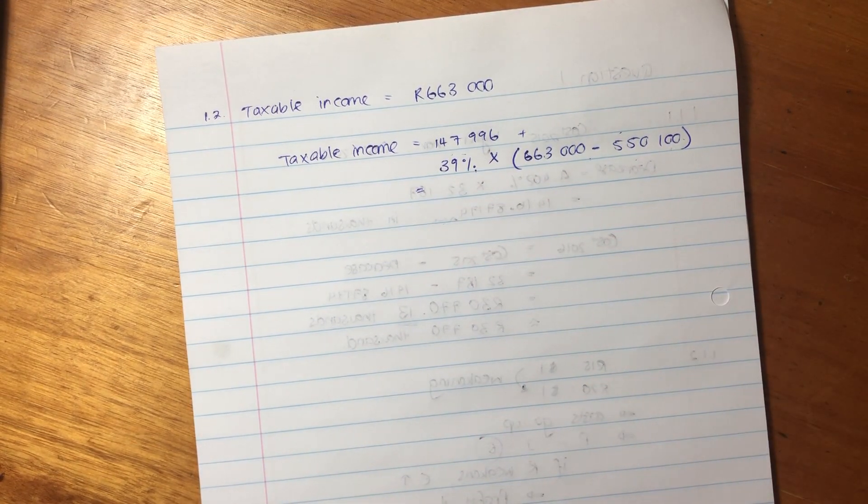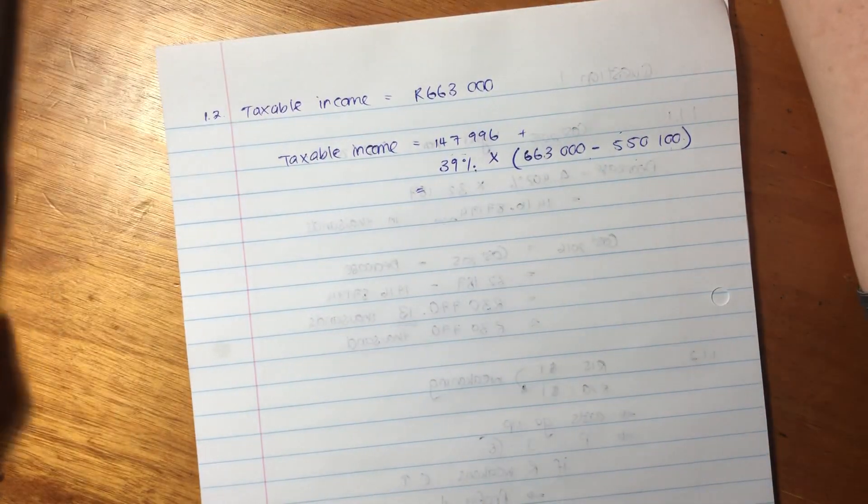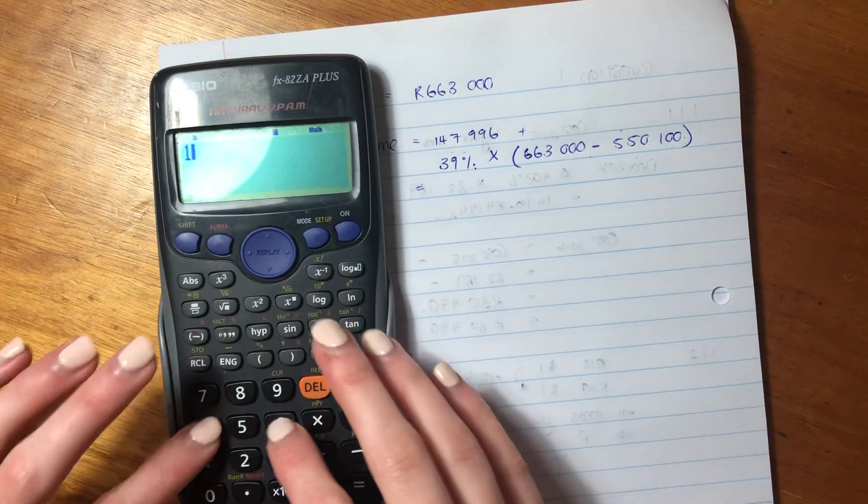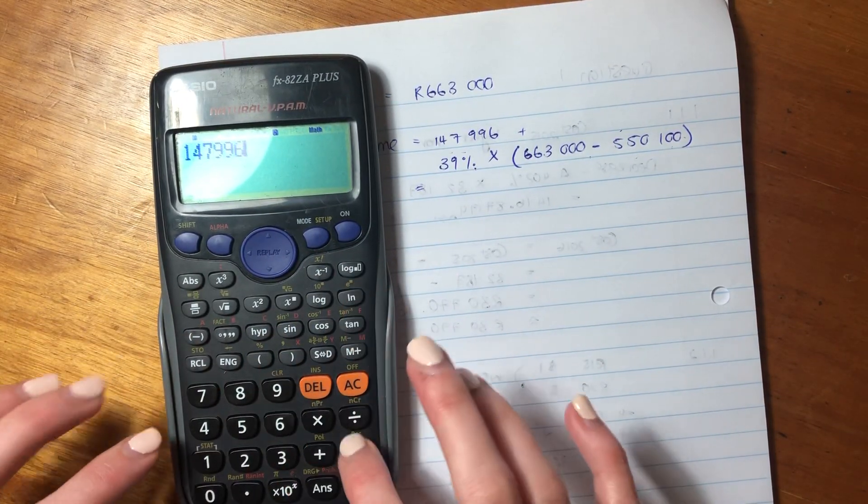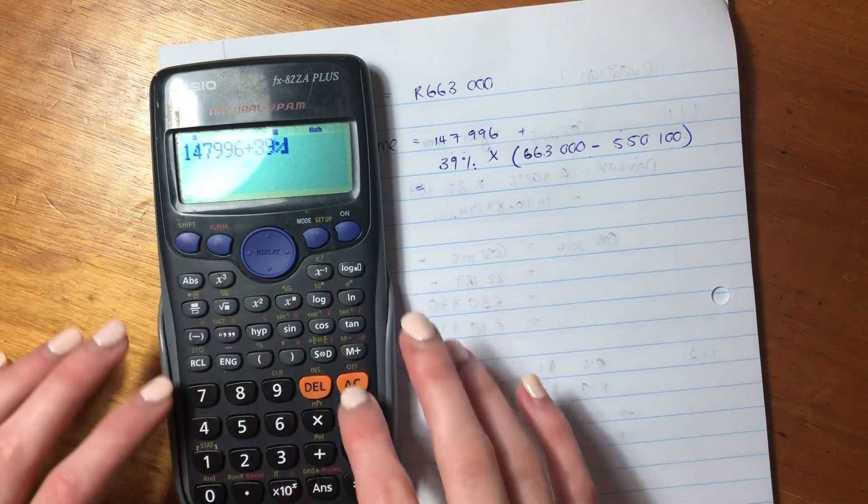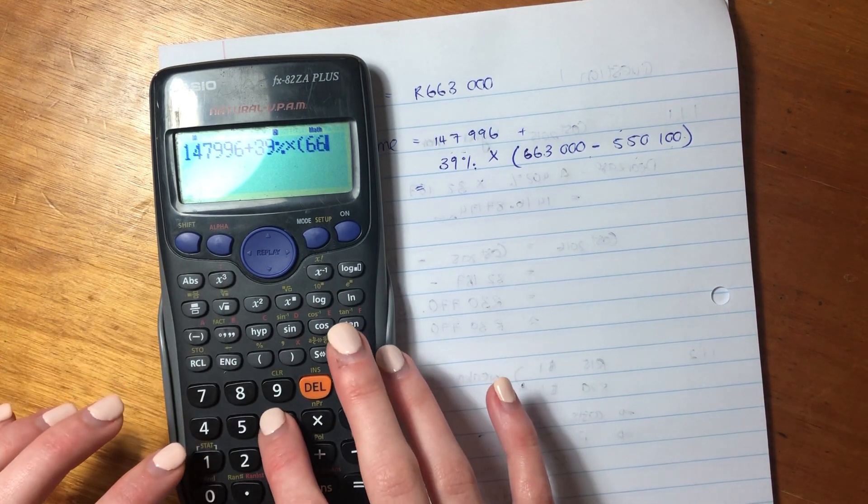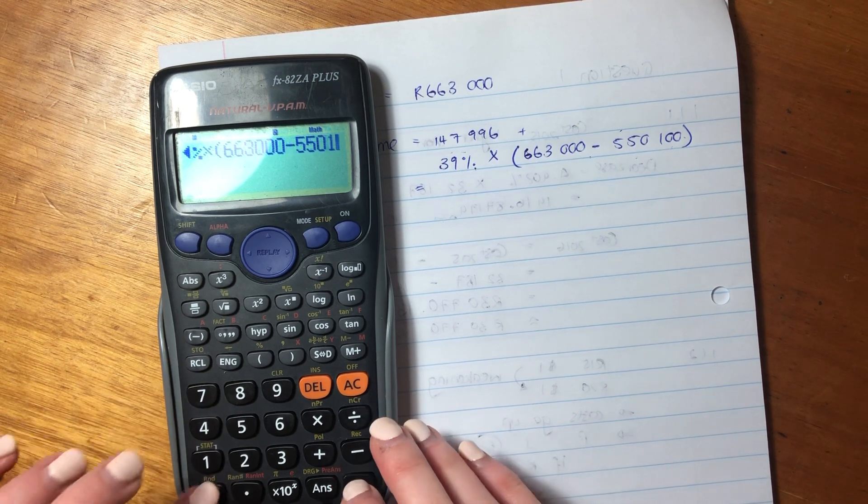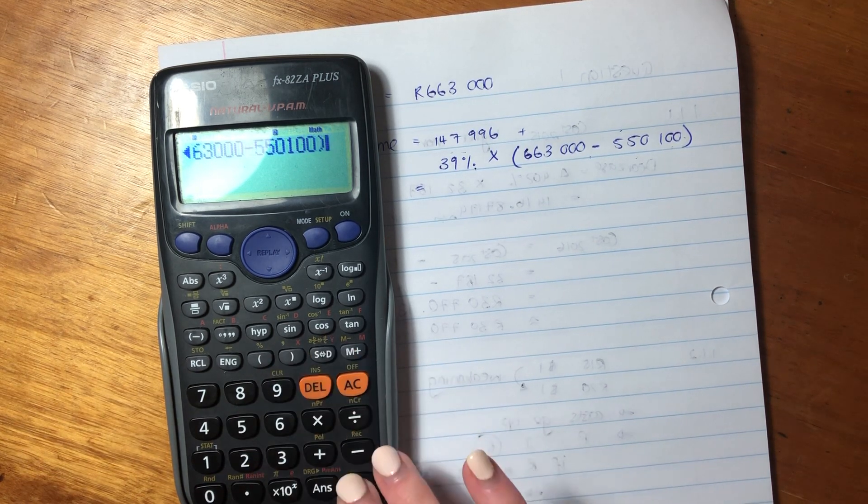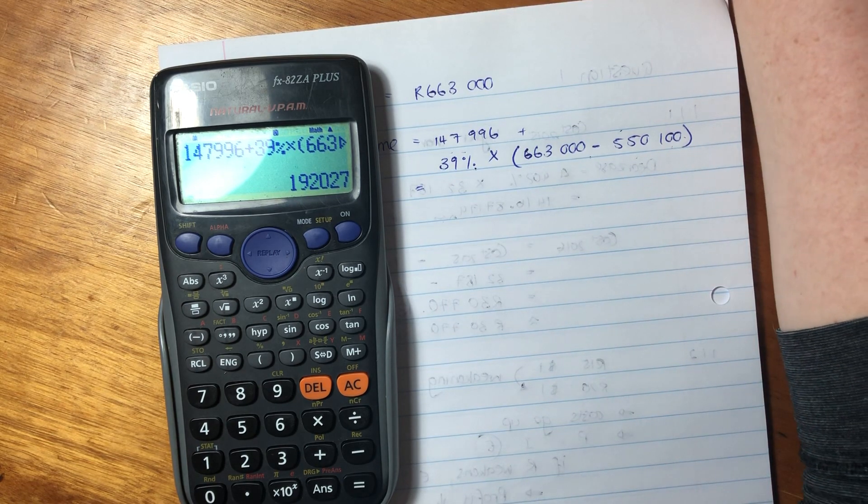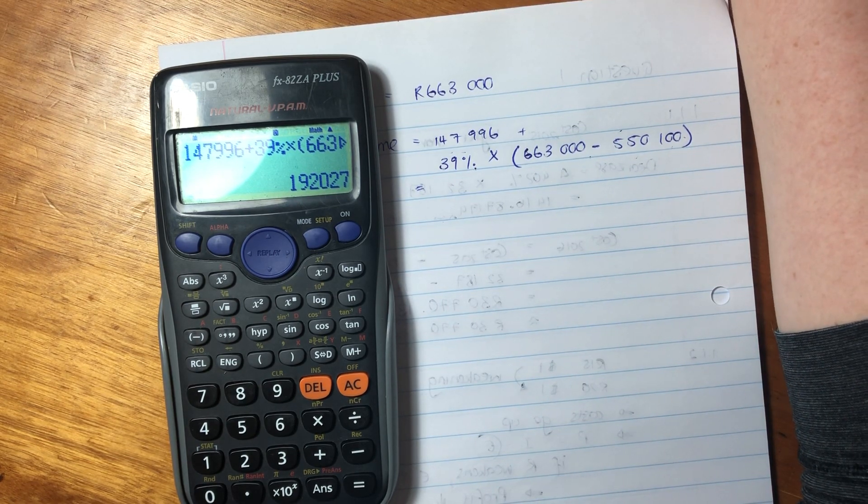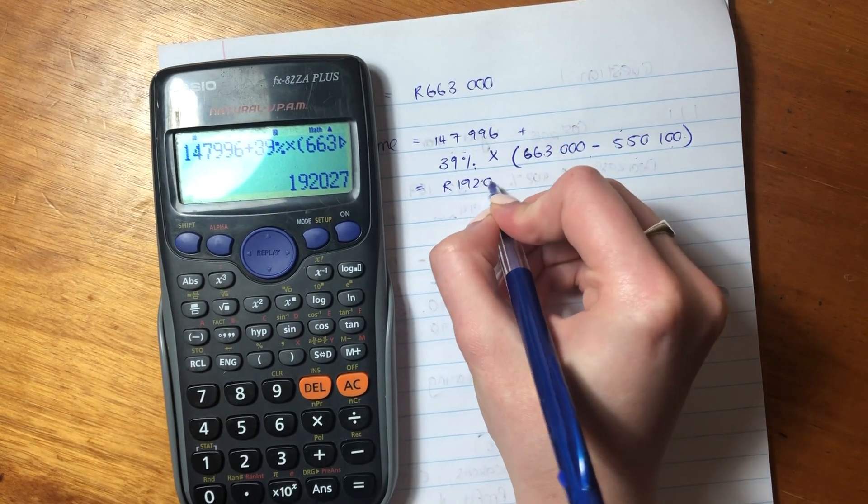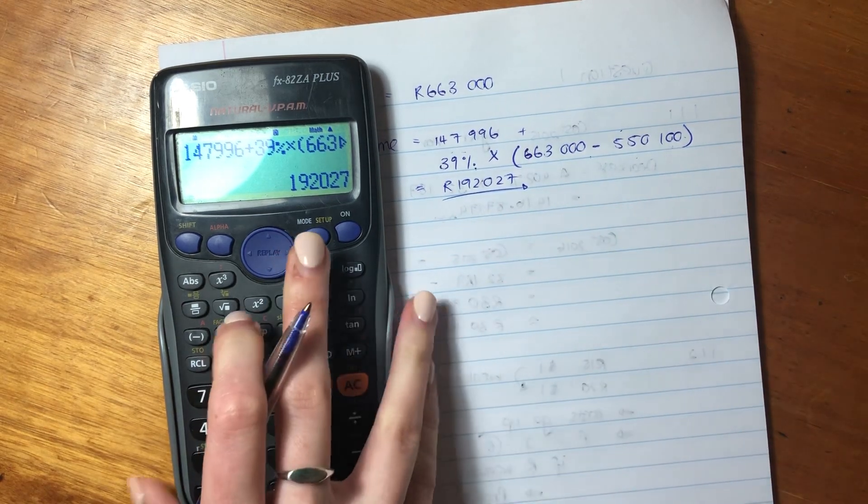So let's now put this into our calculator. So we are going to say $147,996 plus 39% times bracket $663,000 minus $550,100. Okay, so that is the amount that he is going to pay in tax, but this is before rebates. So that's before any rebates.